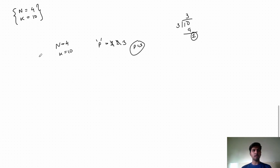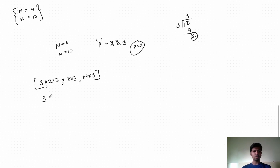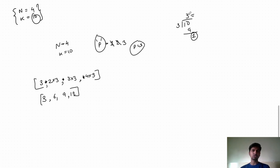We construct our array using p=3: the elements are 3, 6, 9, 12. If you choose any combination of these elements, the sum will never equal k. For example, dividing 10 by 3 gives 3.333..., which is not an integer. So this is a valid array for this test case.